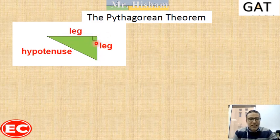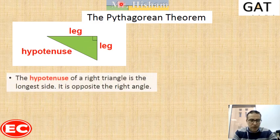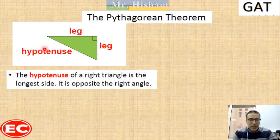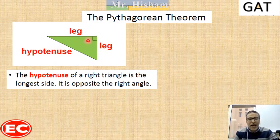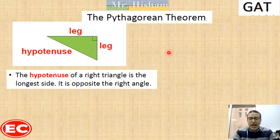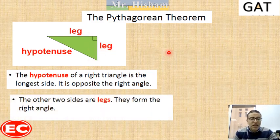We call them legs, and we have the side opposite to the right angle and we call it the hypotenuse. The hypotenuse is the longest side in the right angle triangle and it's opposite to the 90-degree angle. The other two sides we call legs. You have cases where the two legs are equal, and cases where one leg is greater in length than the other.